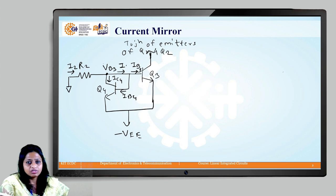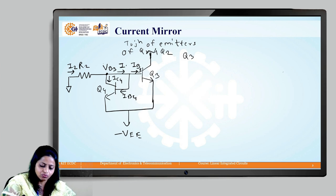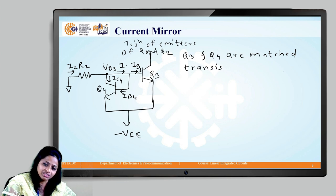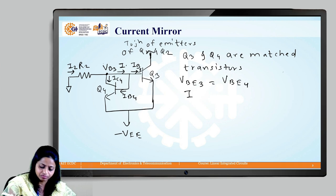Now, since we have considered Q3 and Q4 as the matched transistors, it means that their base emitter voltages are same, that is VBE3 is equal to VBE4. Then their base currents are same and their collector currents are also the same.